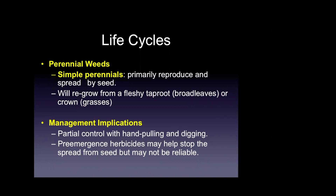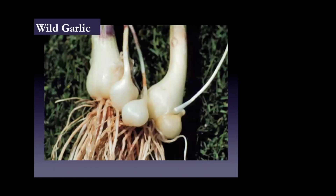A good example of a simple perennial emerging in fall is wild garlic and wild onion — emerging not only from seed but also from below-ground bulbs that stay dormant during summer. As temperatures cool, these plants re-emerge and can be very troublesome in dormant turfgrasses during winter. Pre-emergent herbicides typically do not control plants emerging from below-ground vegetative structures such as bulbs.